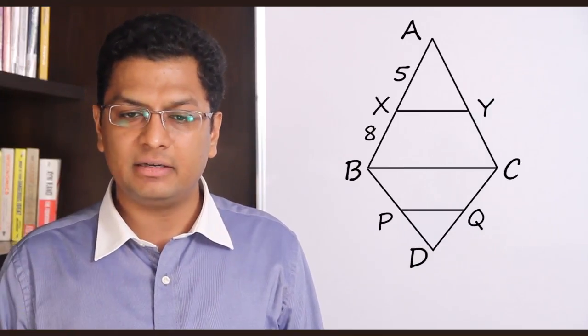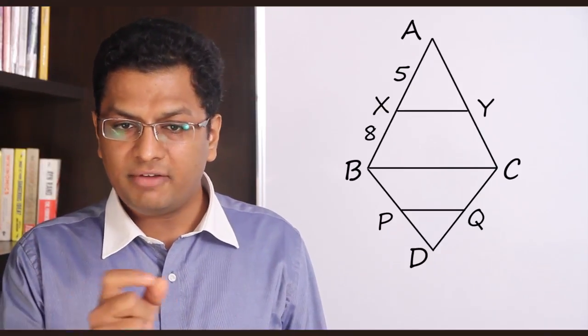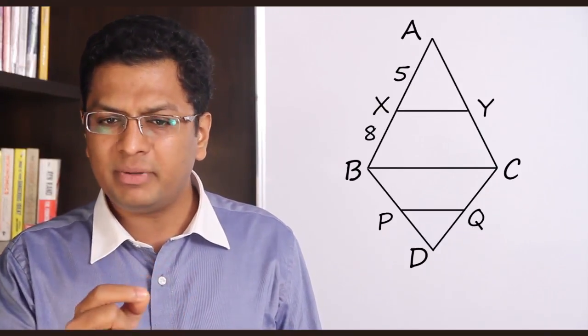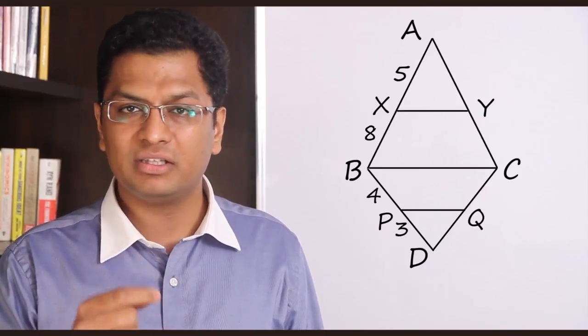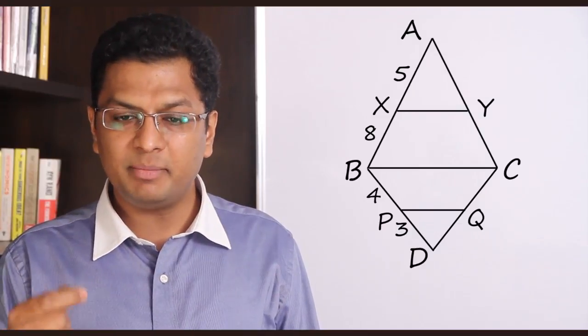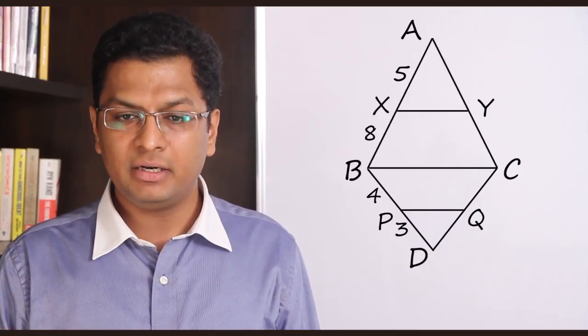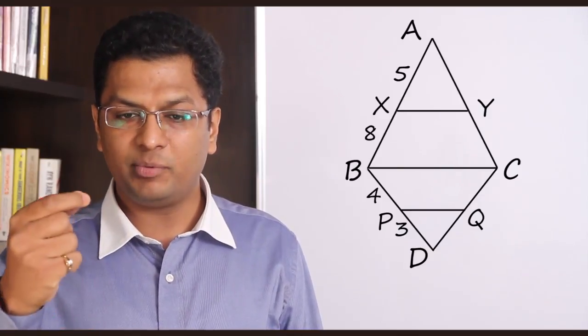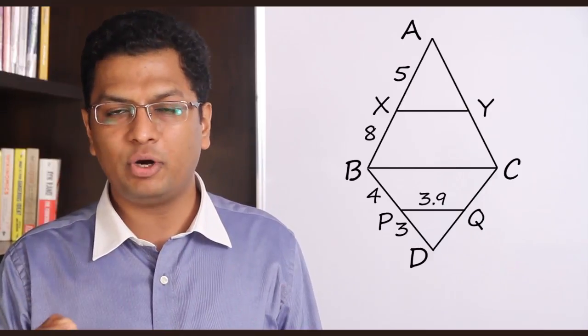Let us have a look at the other triangle. PQ parallel to BC. Now DP upon PB is 3 upon 4. So DP upon DB will be 3 upon 7. This will be PQ upon BC. So PQ upon BC is 3 upon 7 and the other one was 5 upon 13. Calculating, we can get PQ equal to 3.9 cm.